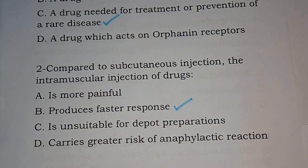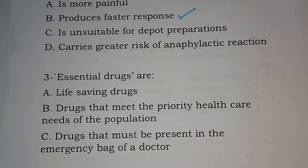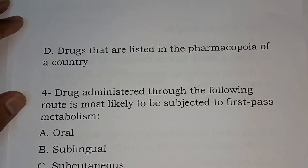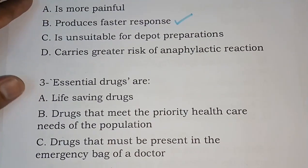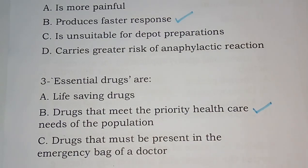Question number three: essential drugs are — options are: life-saving drugs; drugs that meet the priority health care needs of the population; drugs that must be present in the emergency bag of a doctor; drugs that are listed in the pharmacopoeia of a country. The correct answer is option B: drugs that meet the priority health care needs of the population. That is the essential drug definition.